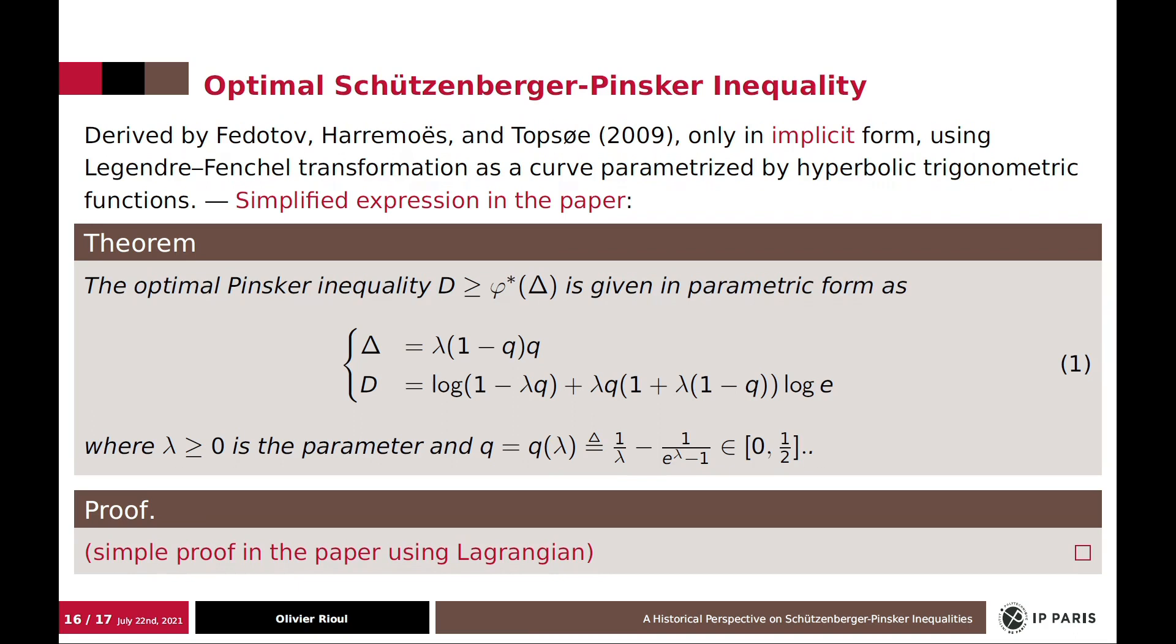So I have found a simplified proof and a simplified formula for this implicit form of optimal Pinsker inequality. That you cannot beat. It's actually the correct function, which doesn't appear in explicit form. So if you want to have a simple proof of this, you can still have a look at my paper.